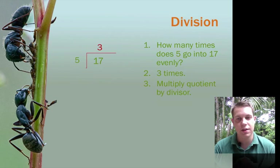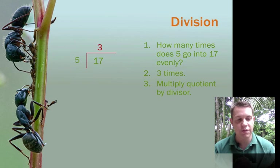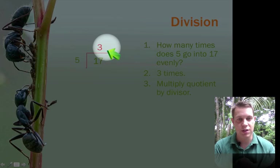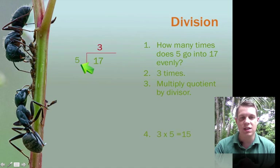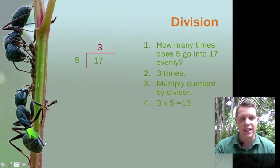Then our next step, multiply the quotient by the divisor. Remember, this is the quotient. This is the divisor. And like we just said, 3 times 5 is 15. So the 15 goes below the 17.